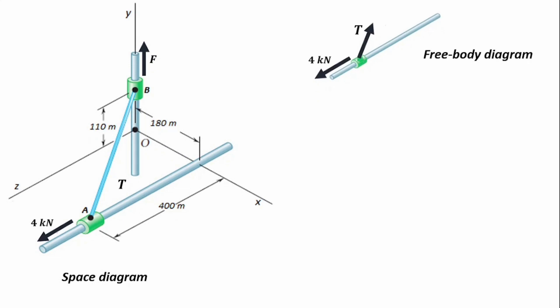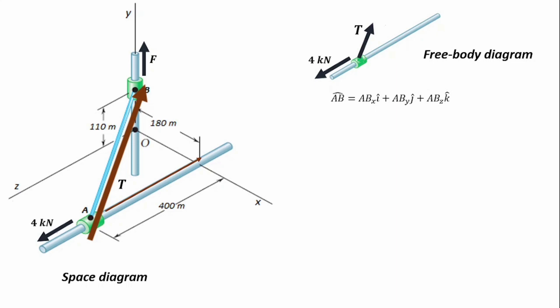Next is to take these forces to their component form so that we can quickly and easily apply the principle of equilibrium to find the unknowns. To take the first force — the tension T — to its component form, we need to find the displacement vector: how far this force would have moved if it travels from point A to point B. That gives us AB = ABX + ABY + ABZ. The first movement would be along the Z axis, with a displacement of 400 meters. So ABZ is minus 400 meters, because it's moving in the opposite direction of the Z axis.